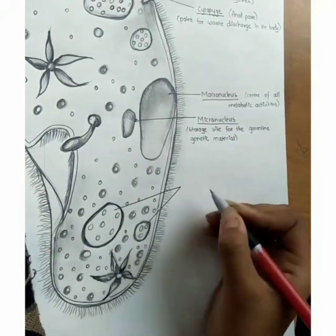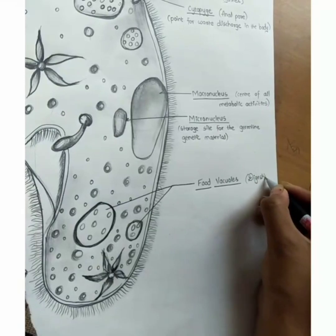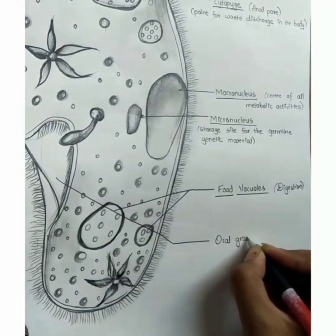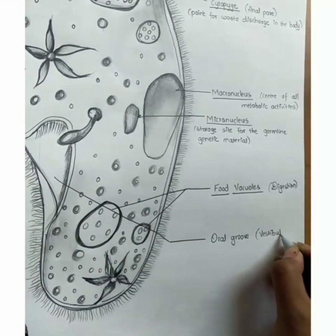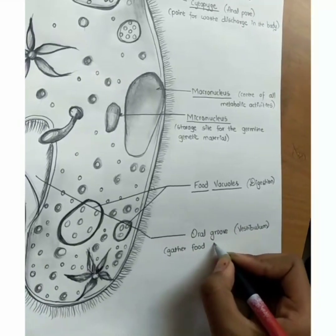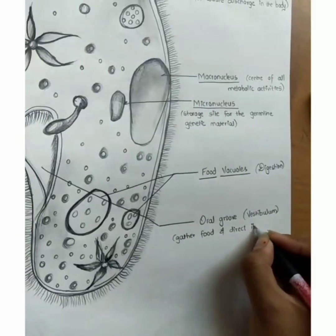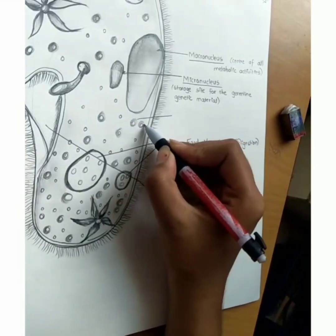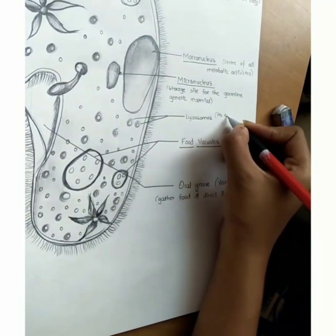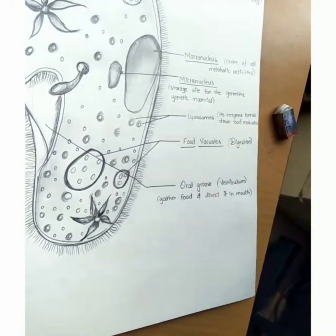These both are food vacuoles and they help in digestion. This is the oral groove, also called the vestibulum, which gathers food and directs it into the mouth. These are lysosomes — their enzymes break down food molecules and conduct a form of digestion.